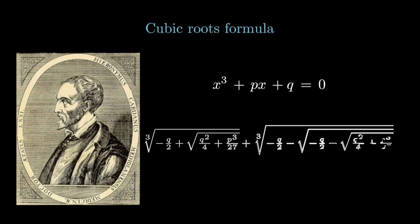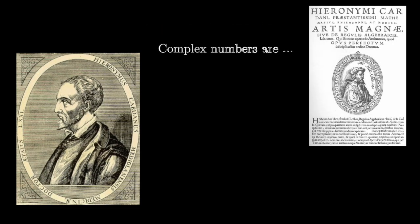Girolamo Cardano, who is famously known for discovering the formula for roots of a cubic equation, seems to be the first guy in history who considered complex numbers with seriousness. But in his work, Ars Magna, he dismisses them as subtle as they are useless.